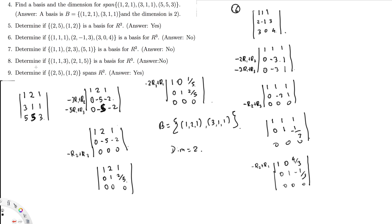The next question is: determine if (1, 1, 3) and (2, 1, 5) is a basis for R3. It's no, because we have only two vectors. They are linearly independent because you can't multiply one to get the other. However, we have to have three vectors — three linearly independent vectors with three coordinates. This has three coordinates, but we need one more linearly independent vector. So therefore, this is no.